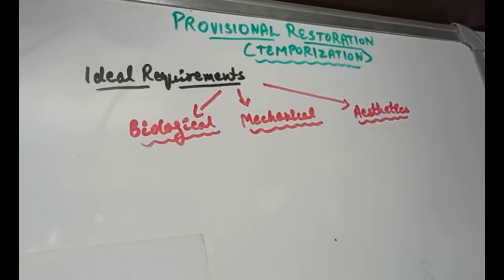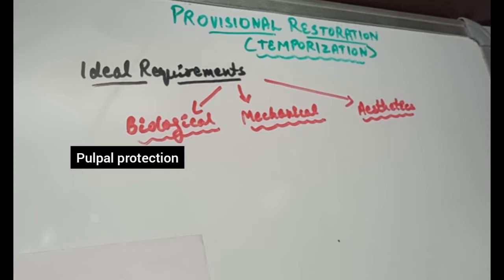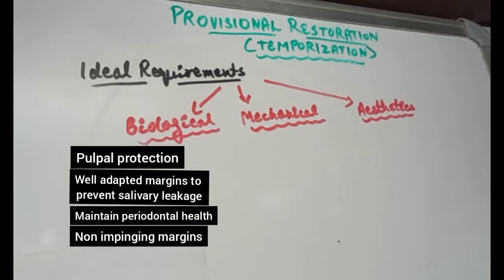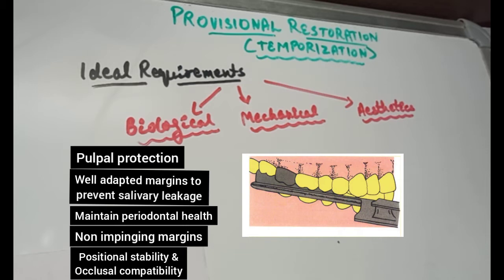Whenever we give any restoration, three broad requirements are important: biological, mechanical, and aesthetics. The first is pulpal protection — since we have a freshly prepared tooth, it will be more prone to sensitivity. Therefore the restoration must be fabricated with a material that prevents thermal conduction. The margins should be well adapted to prevent salivary leakage, maintain periodontal health, and be non-impinging. Good positional stability and occlusal compatibility are also important, aiding patient comfort and preventing tooth migration and neuromuscular imbalance.